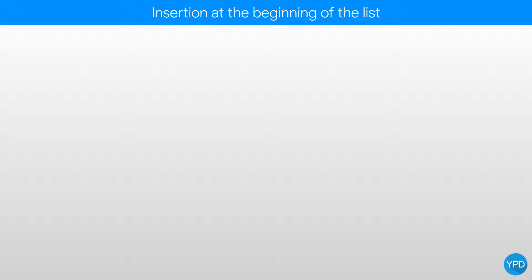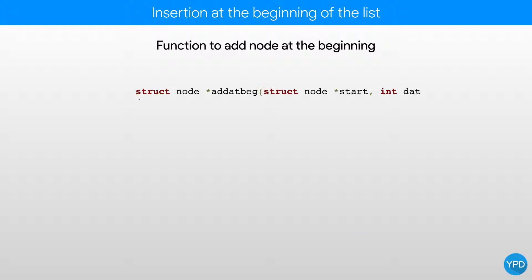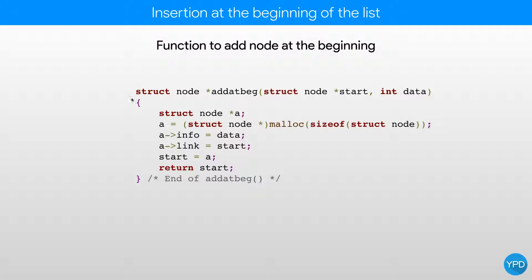I hope you get it. Now let's write the function to add a node at the beginning. The return type of the function is a structure pointer because we will be returning start at the end of the function. The parameters are the structure pointer start and the data that we have to insert. We start by initializing our pointer A and allocate memory using the malloc statement — I'll put a link in the description about malloc. We assign the info part of node A with the data from the parameter, assign the link part with start, which holds the address of node P, then make start point to node A, and return start.